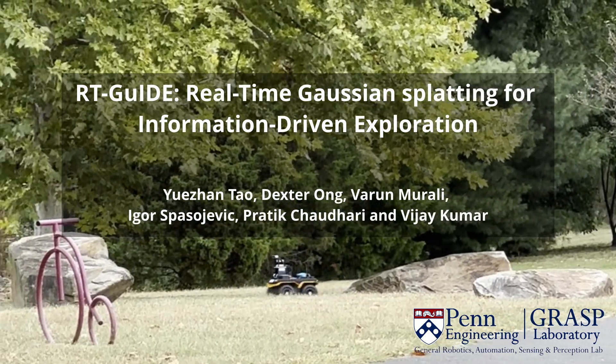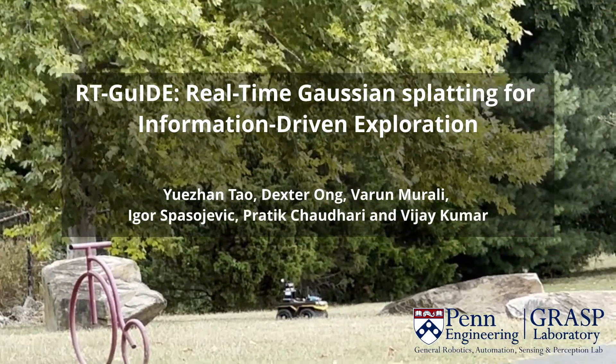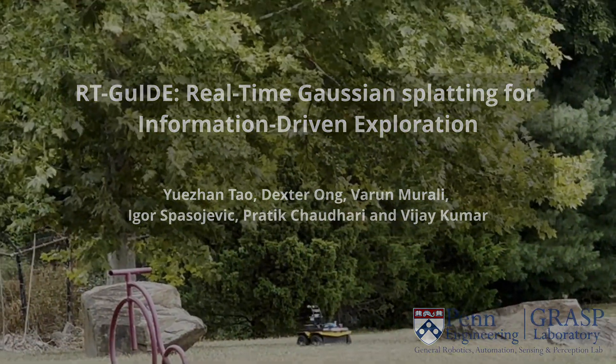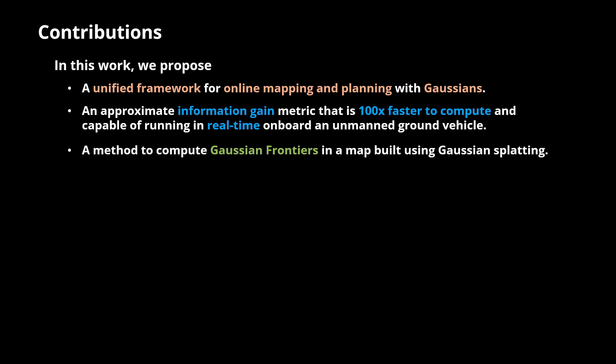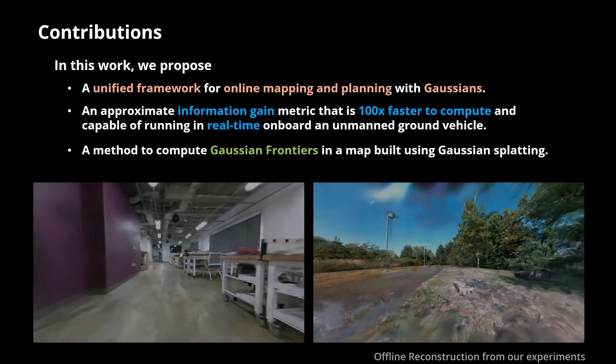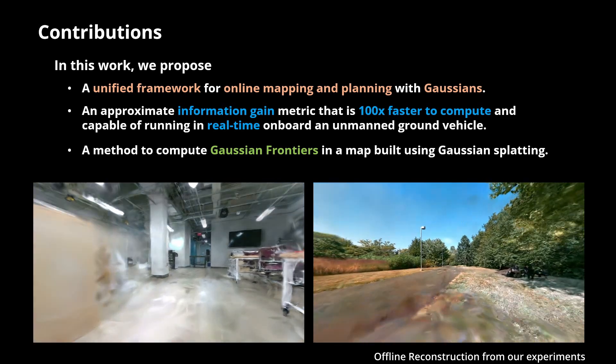We present our key guide: Real-time Gaussian Splatting for Information-Driven Exploration. In this work, we propose a unified framework for online mapping and planning with Gaussians, an approximate information gain metric that is orders of magnitude faster to compute compared to baselines, and a method to compute areas of underexplored space in Gaussians that unifies exploitation and exploration.